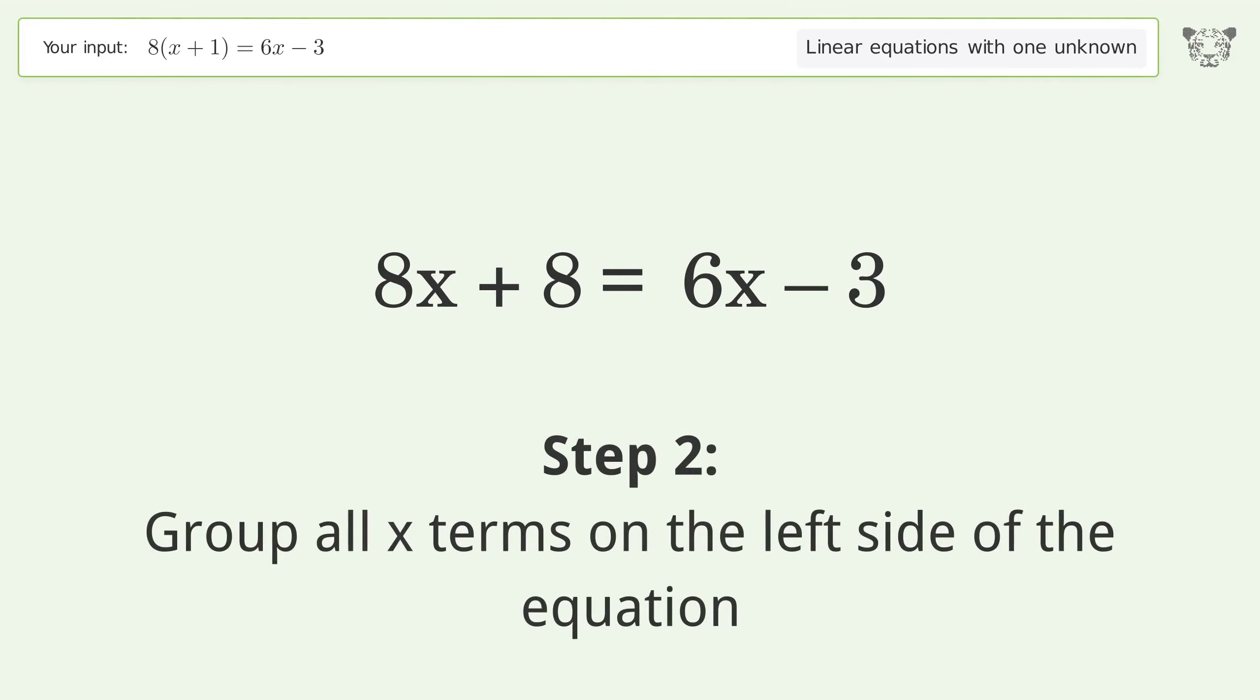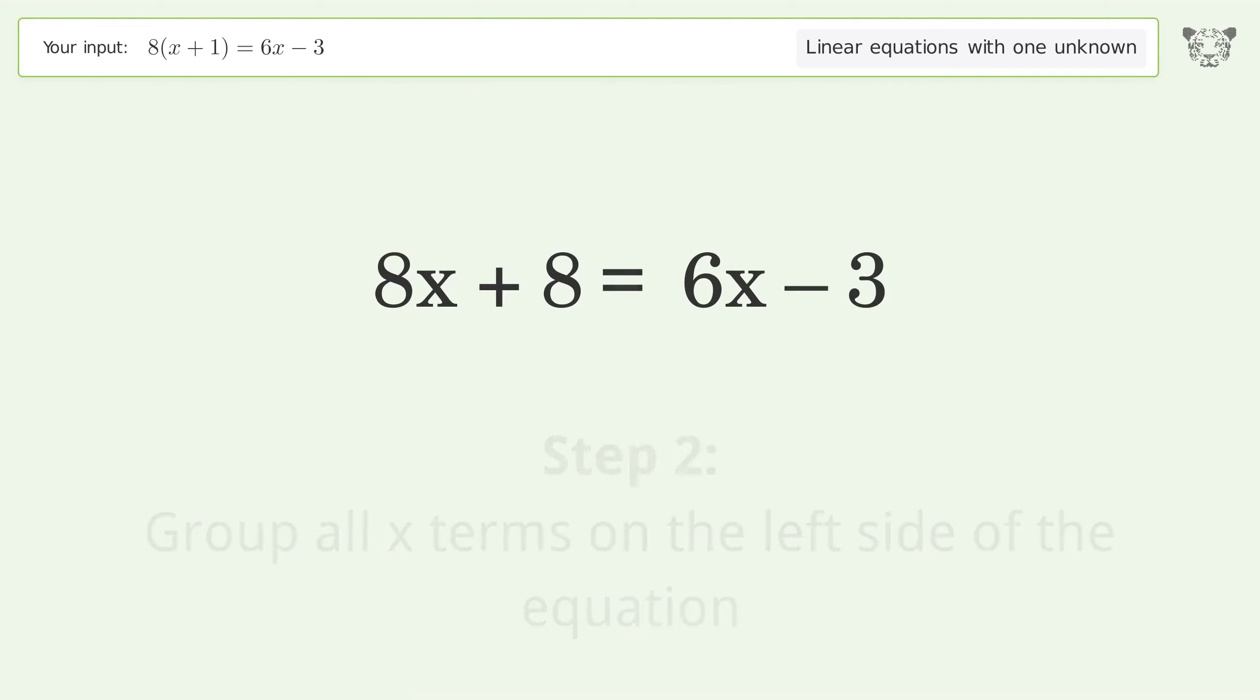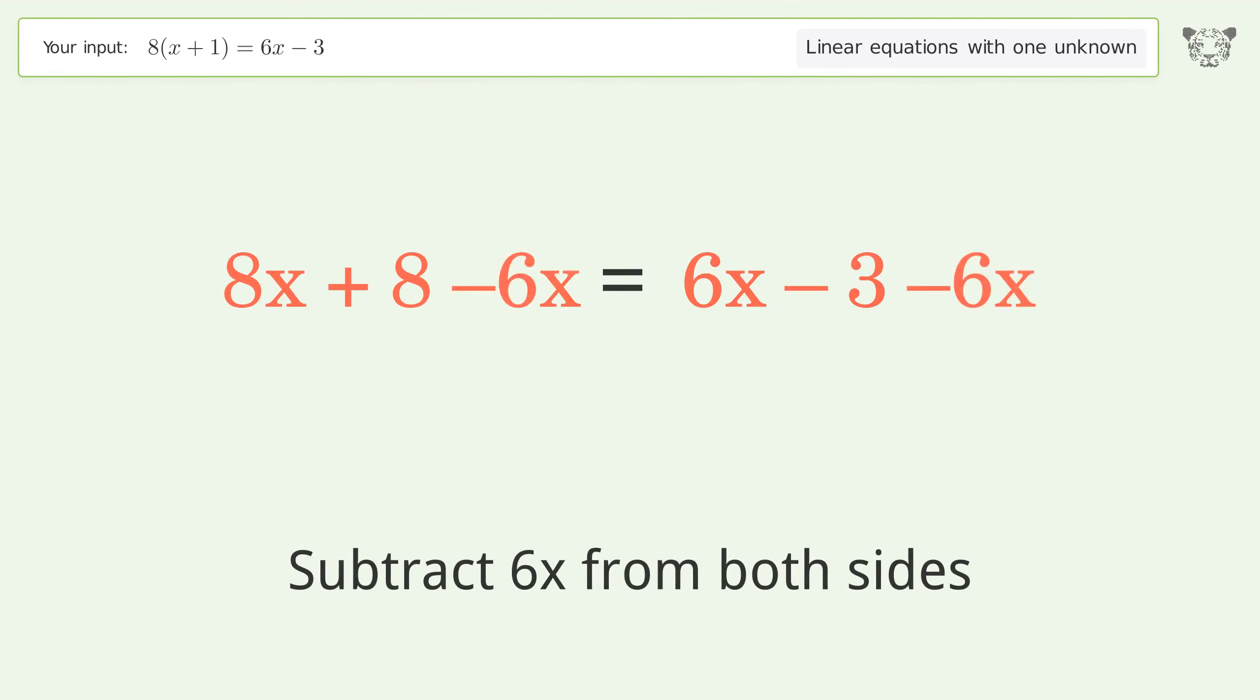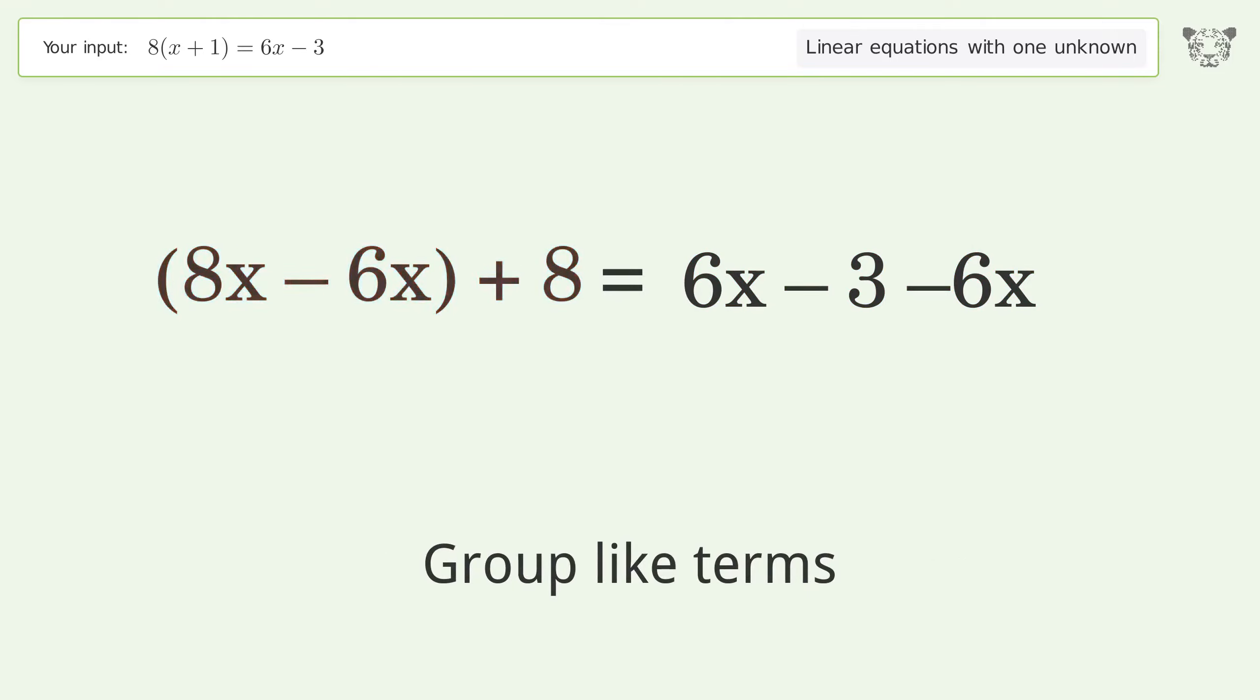Group all x terms on the left side of the equation. Subtract 6x from both sides. Group like terms, simplify the arithmetic.